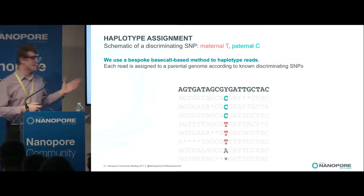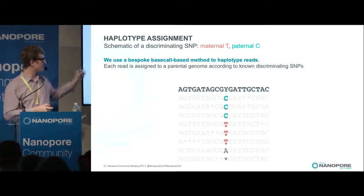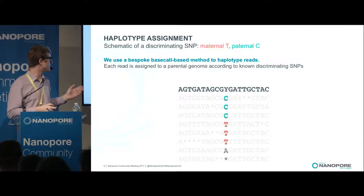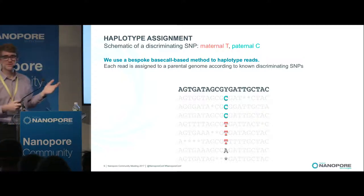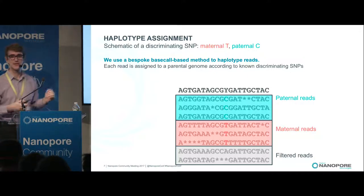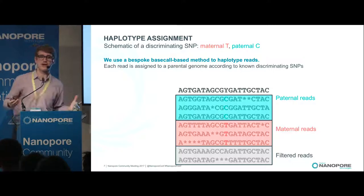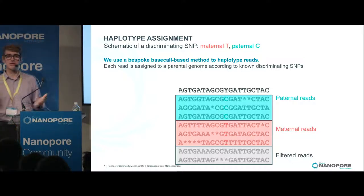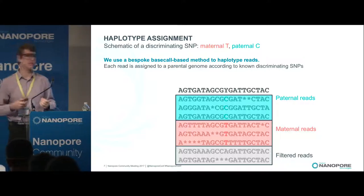Here's a schematic example. We have a SNP in the middle, which could either be a C on the paternal chromosome or a T on the maternal. Anywhere we see the paternal genotype, we assign that read to the paternal chromosome, and the same for the maternal. Reads with errors there are called filtered. In practice, we might have 30, 100, or 300 SNPs, so we only filter reads if we really can't make a decision.